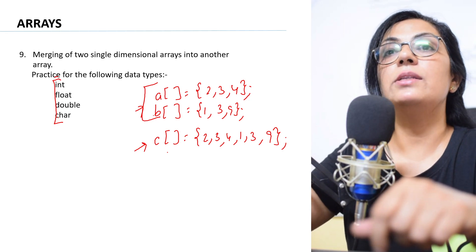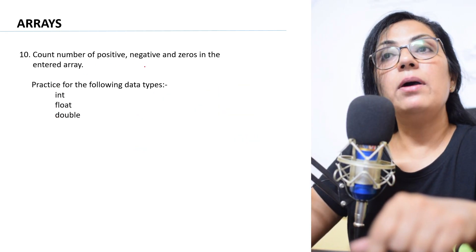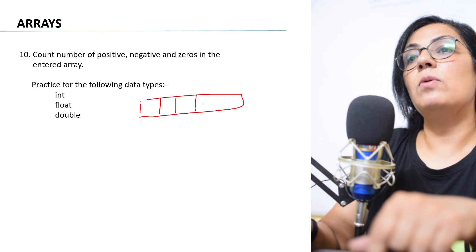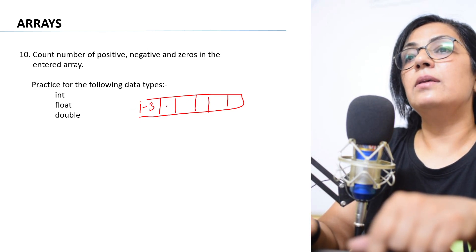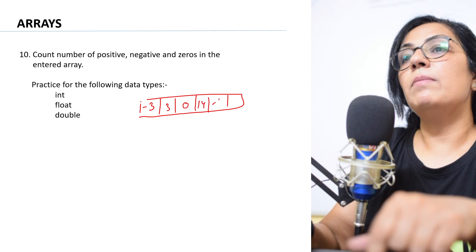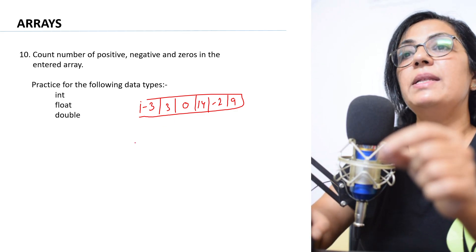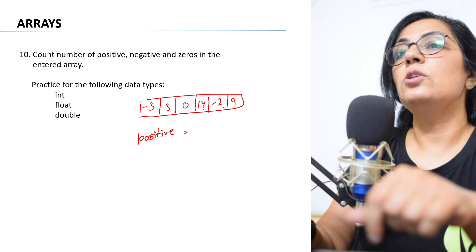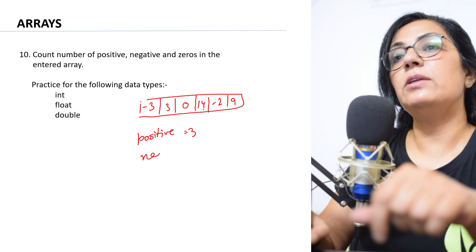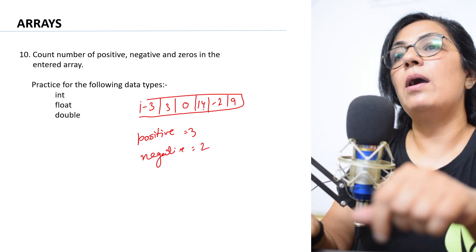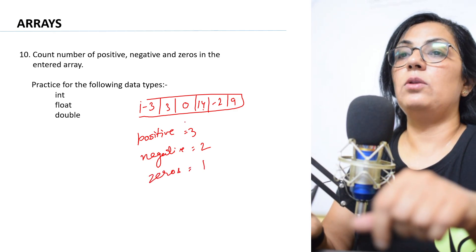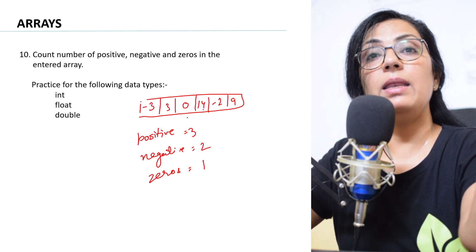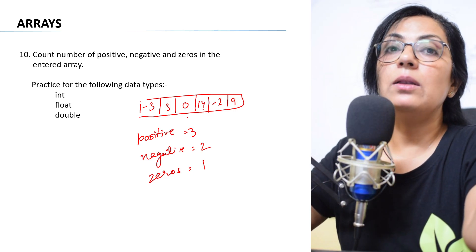The next question: count the number of positive, negative, and zero values in the entered array. For example, if the array elements are -3, 3, 0, 14, -2, 9 — you have to print the count of positive elements (here 3), negative elements (here 2), and zeros (here 1). Basically you access each array element and check the condition as per the question.